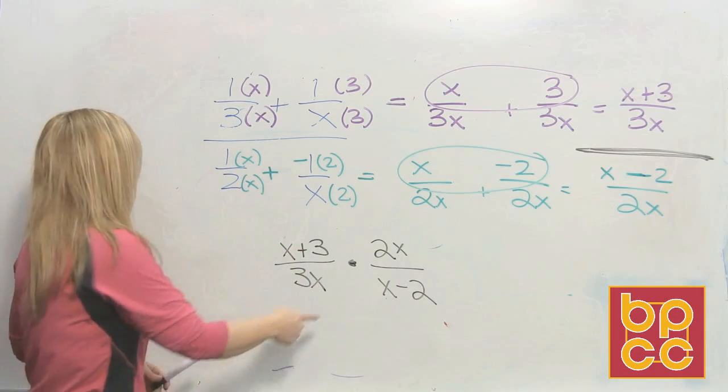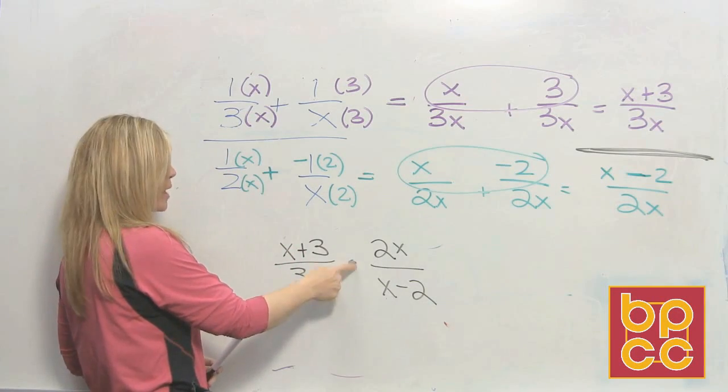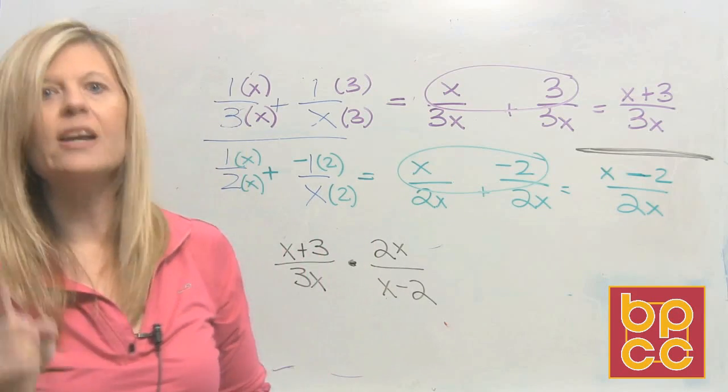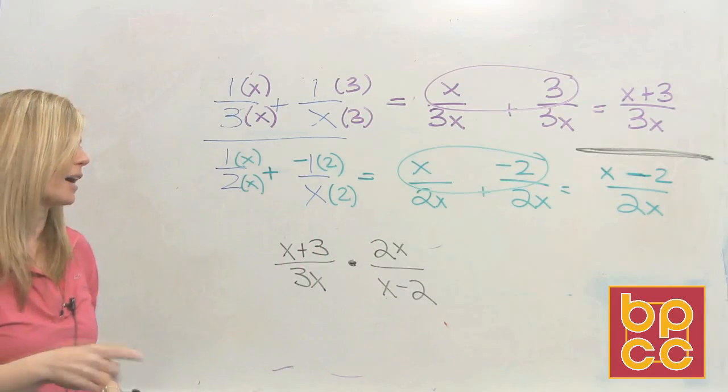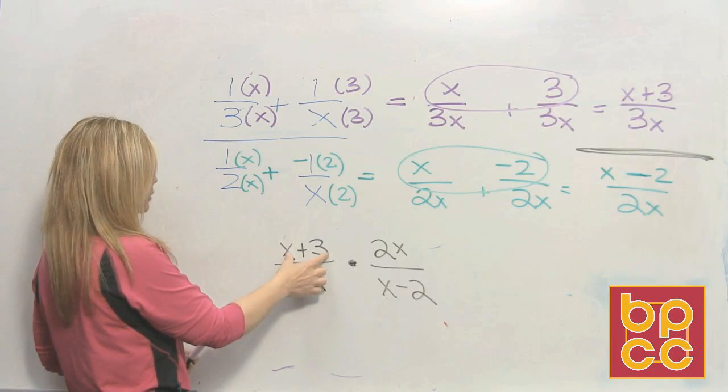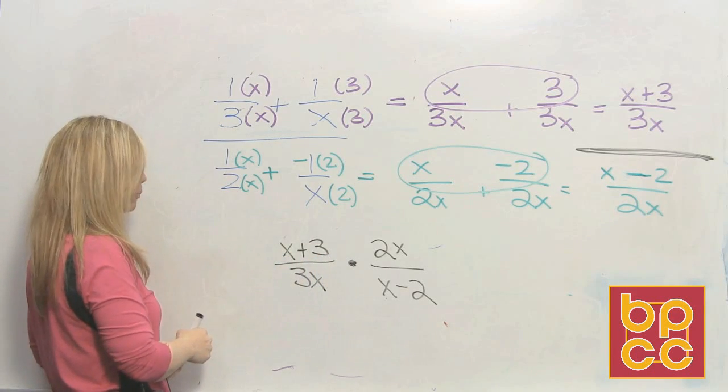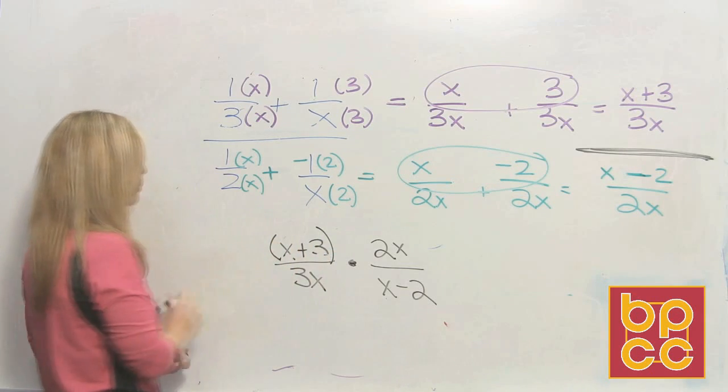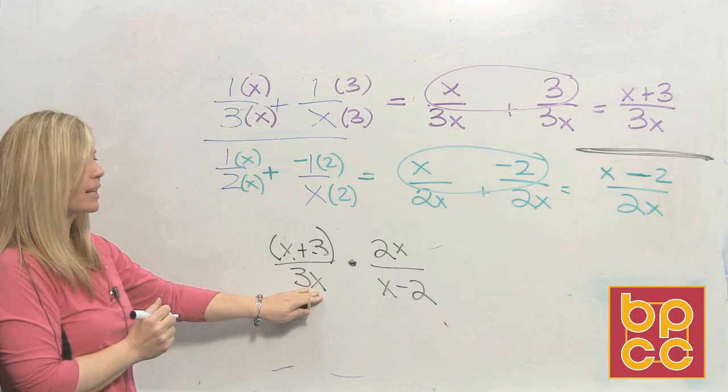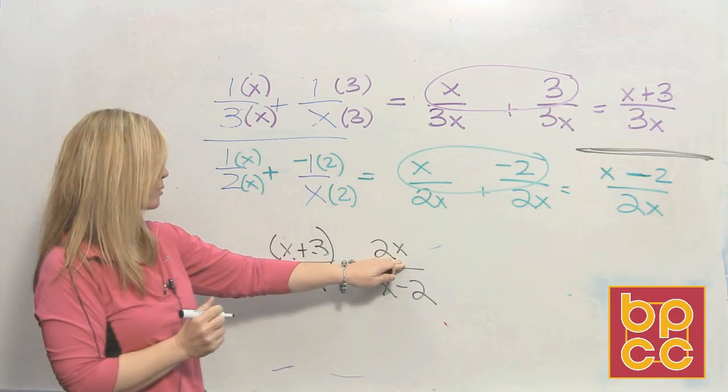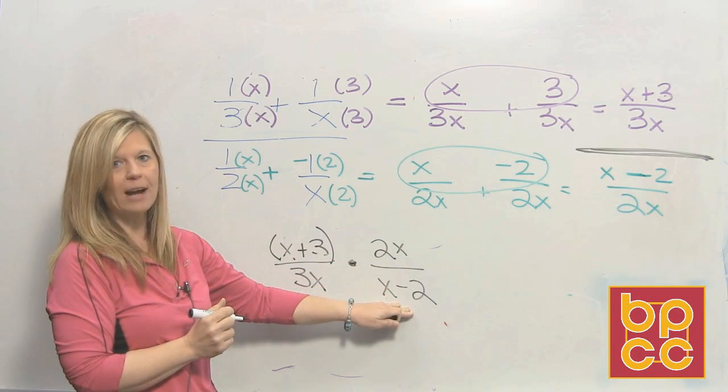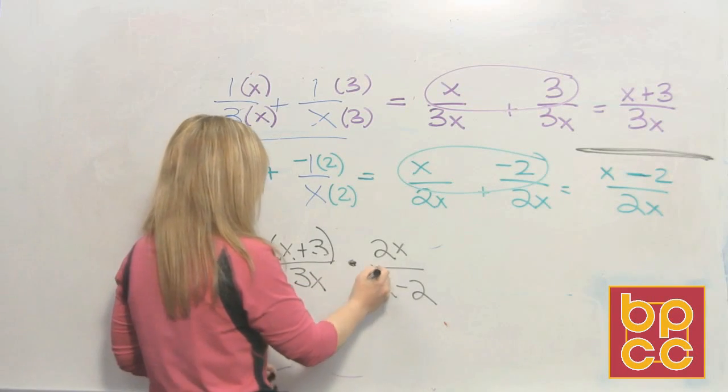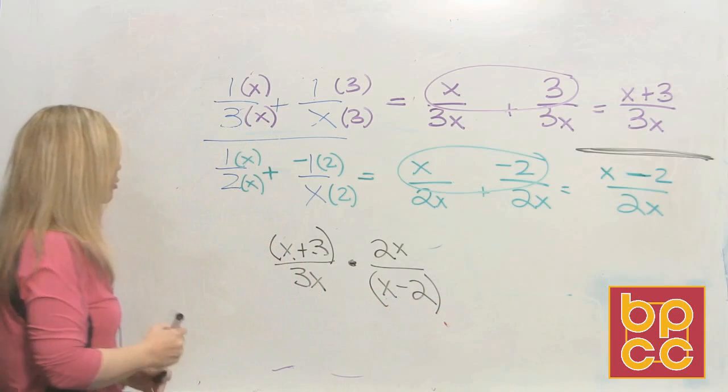Now we're back to multiplying fractions is no problem. Top times top, bottom times bottom. Before you start to multiply, factor first, then divide. So I'm going to ask you, can x plus 3 factor? Nope. No GCF, not a difference of perfect squares, not a trinomial. It's got to stay together. We put it in parentheses. That's already connected by multiplication. That's already connected by multiplication. Can x minus 2 factor? Nope. No GCF, no difference of perfect squares, no trinomial. So nothing will factor.